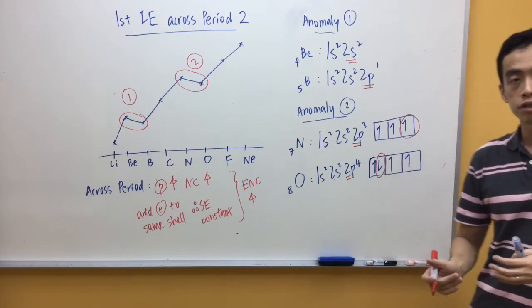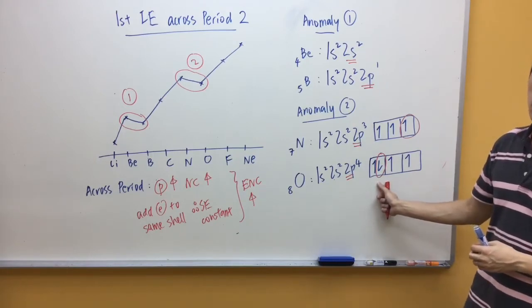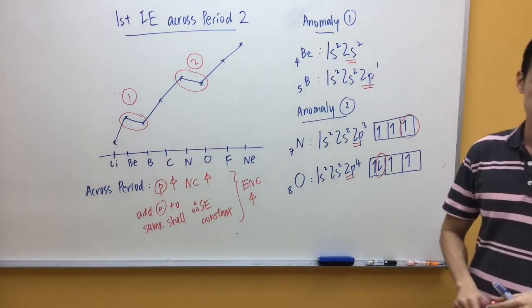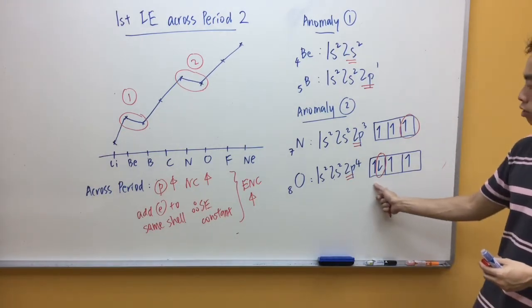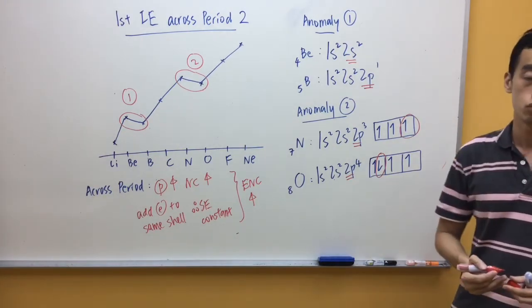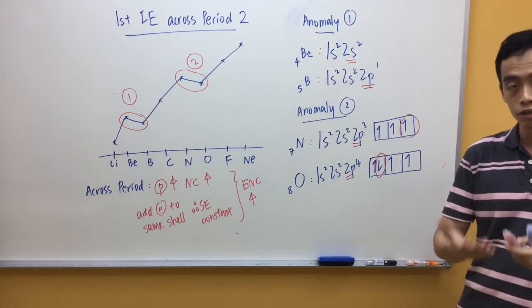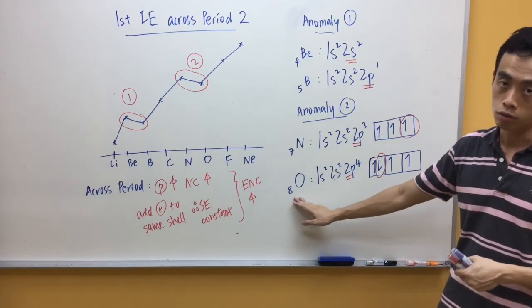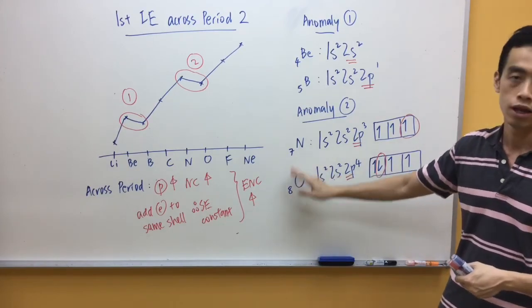Now, what you notice in this case is because this electron is sharing the orbital with another electron, it experiences inter-electronic repulsion between these two electrons inside the same 2p orbital. So, it makes it easier for me to remove this particular electron. So, therefore, oxygen will have a slightly lower first ionization energy than nitrogen.